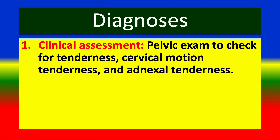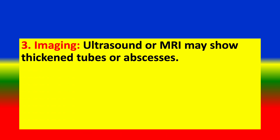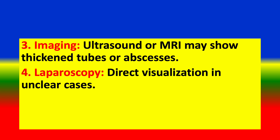Diagnosis: 1. Clinical assessment — pelvic exam to check for tenderness, cervical motion tenderness, and adnexal tenderness. Laboratory tests: elevated WBC count, ESR, CRP, and testing for STIs. Imaging: ultrasound or MRI may show thickened tubes or abscess. Laparoscopy for direct visualization in unclear cases.